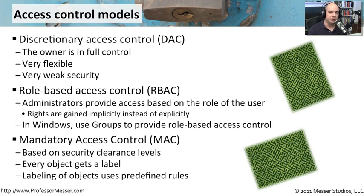We often see mandatory access control used in government-type environments where there are security clearance levels. Everything that you need to access would have a label associated with it — every document, every printer — labeled with secret, top secret, or code blue. Your account would be given a certain level of access. If your access level is top secret, you could access anything labeled top secret or secret, but you would not be able to access anything labeled code blue.